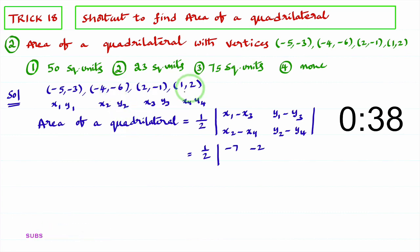Now you observe the second point and fourth point. x2 minus x4, minus 4 minus 1 is minus 5. y2 minus y4, minus 6 minus 2 is minus 8.